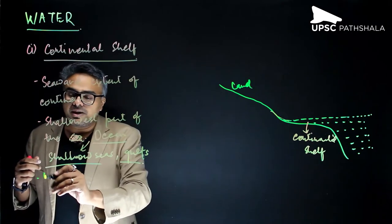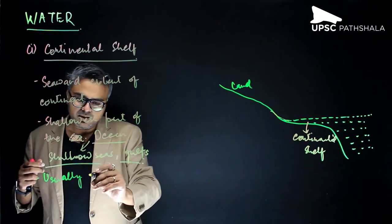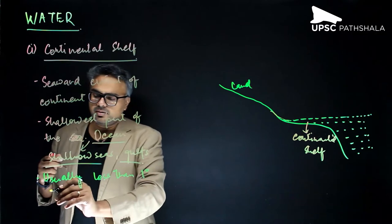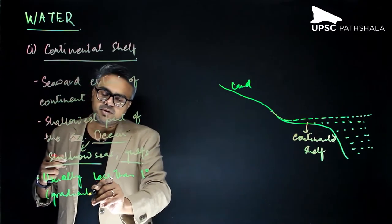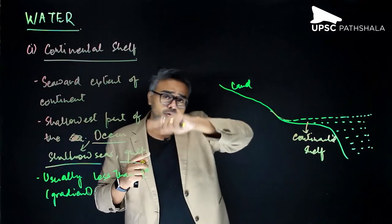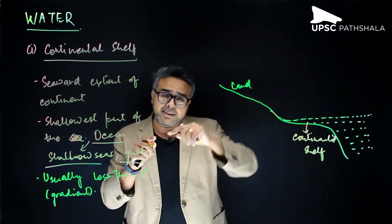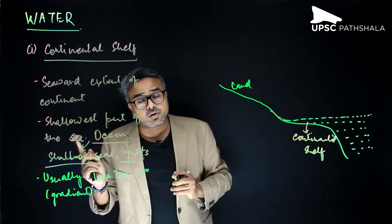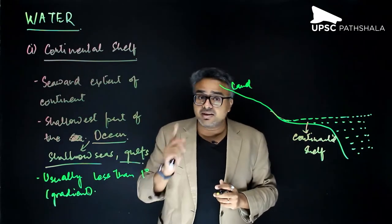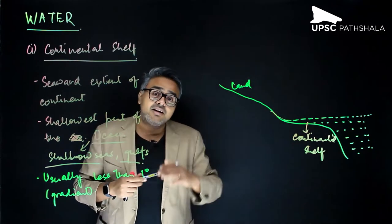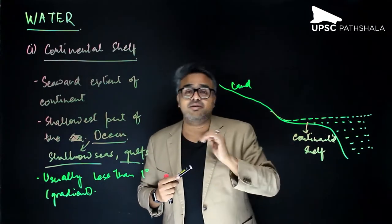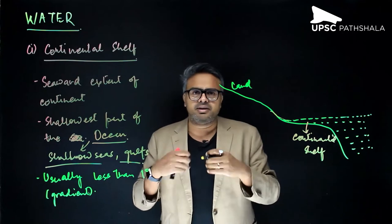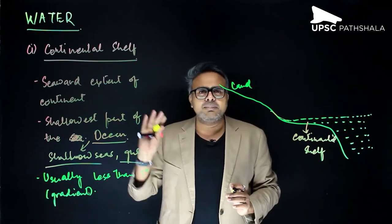The gradient of the continental shelf is usually less than one degree. If you remember those protractors we used in school to draw angles — just see how small an angle one degree is. In the NCERT it is written as one degree; in some other sources like Koenig it is written as one in 500, which would be even less than one degree. We have to trust the NCERT for any public service examination.